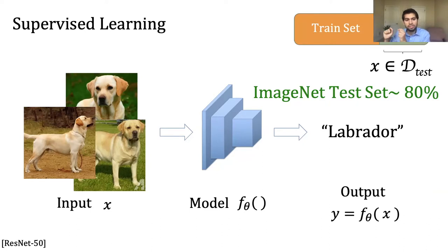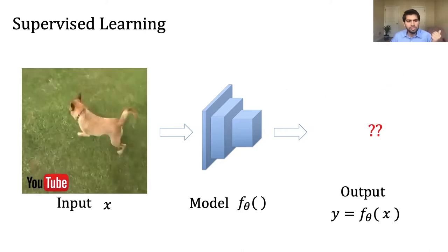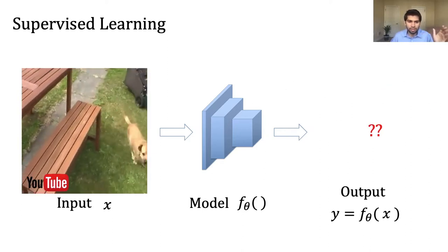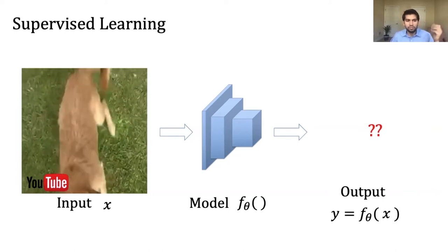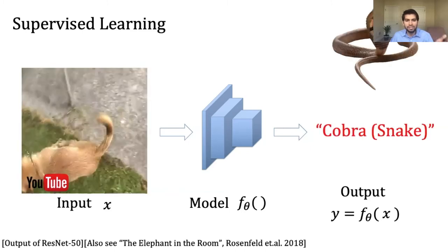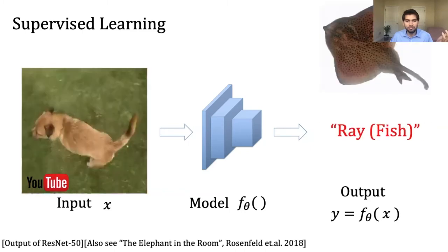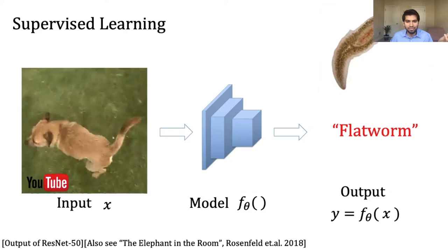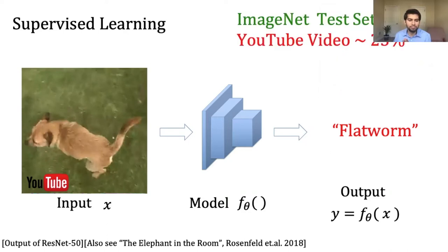Let us see how well this glorious result generalizes. I took the best ResNet model, one of the very high performing ones, and tested it on a video from YouTube — not too far, just from images to videos. This model, which achieves superhuman performance on ImageNet, predicts things like cobra snake, ray fish, flatworm. It completely failed to generalize, dropping from superhuman accuracy to nearly 20% accuracy and finding spurious outputs.